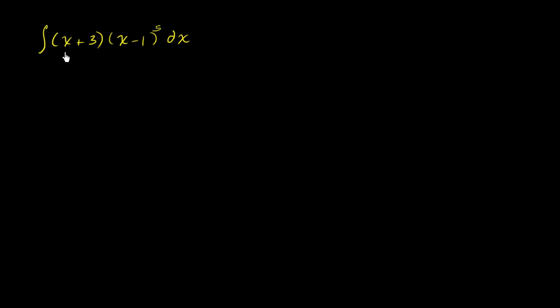We're faced with the indefinite integral of (x + 3)(x - 1)^5 dx. We could solve this by literally multiplying out what (x - 1)^5 is, maybe using the binomial theorem. That would take a while. And then we'd multiply that times x + 3, and we'd end up with some polynomial. And we could take the antiderivative that way.